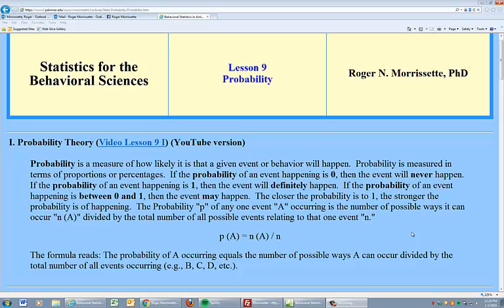The probability, or P, of any one event happening, say an event like A happening, is the number of possible ways it can occur, represented as n(A). This is divided by the total number of all possible events relating to that one event, n.